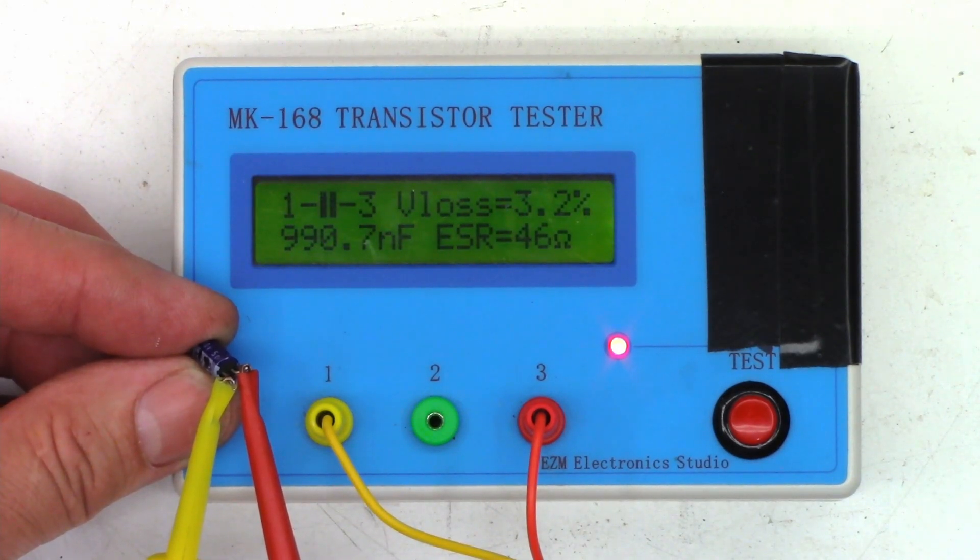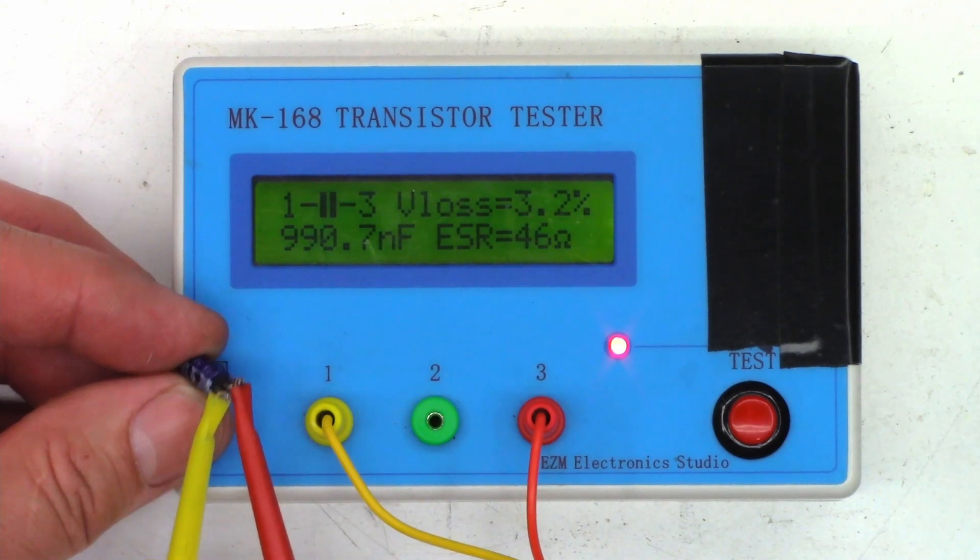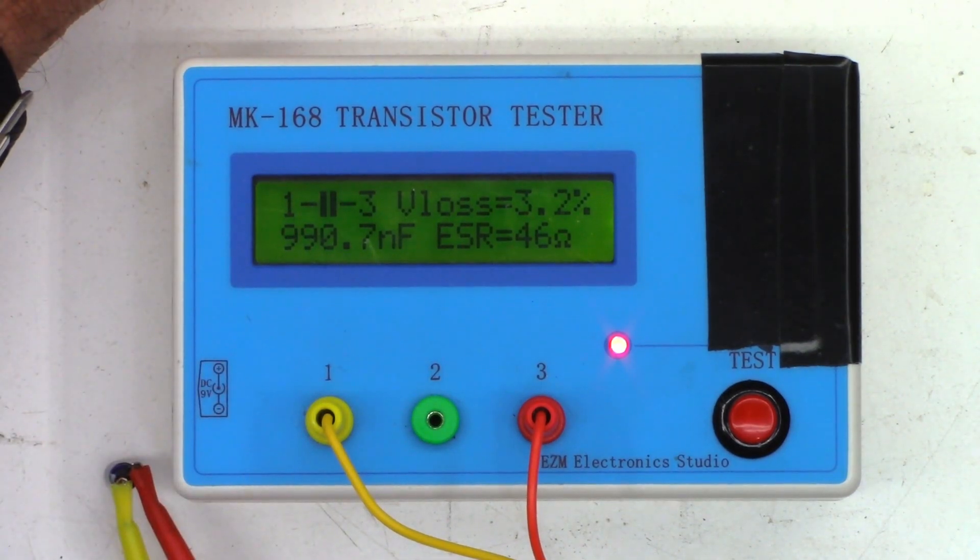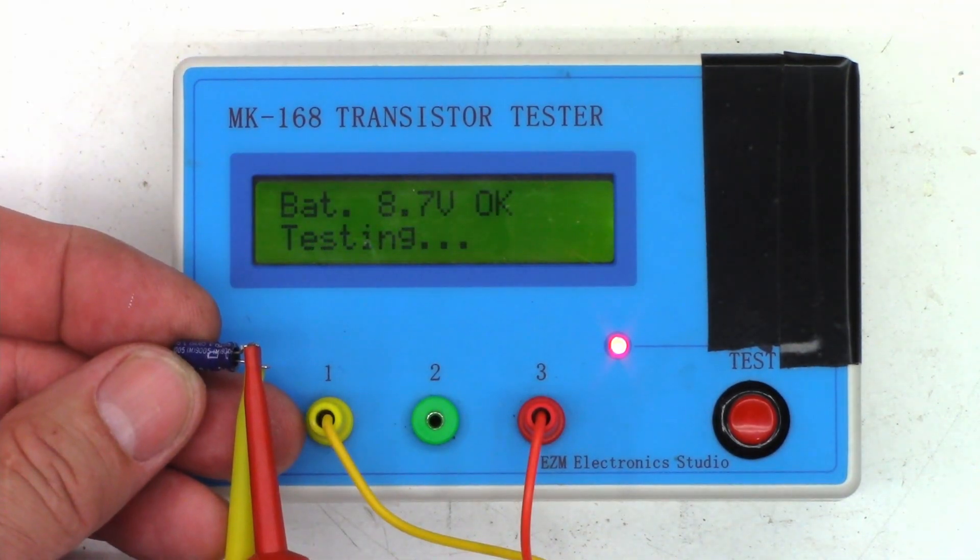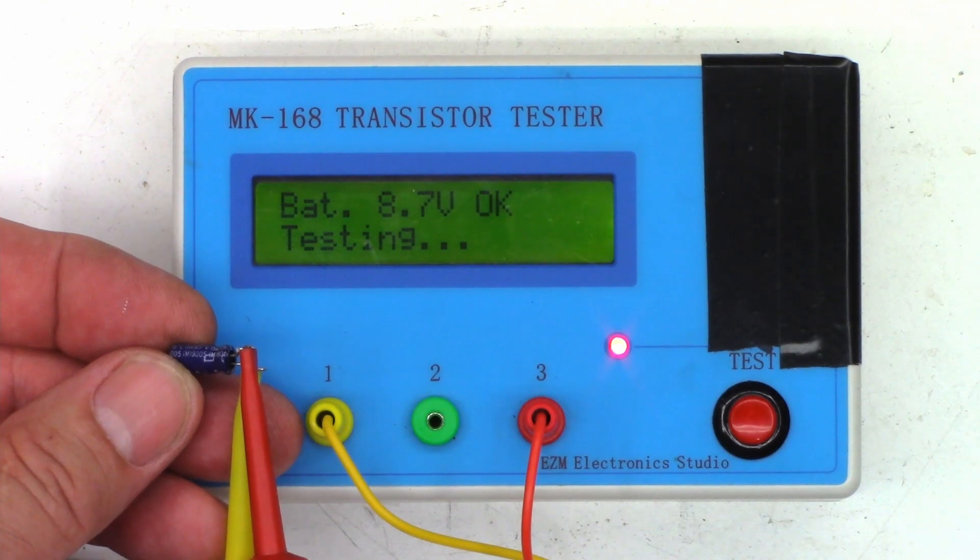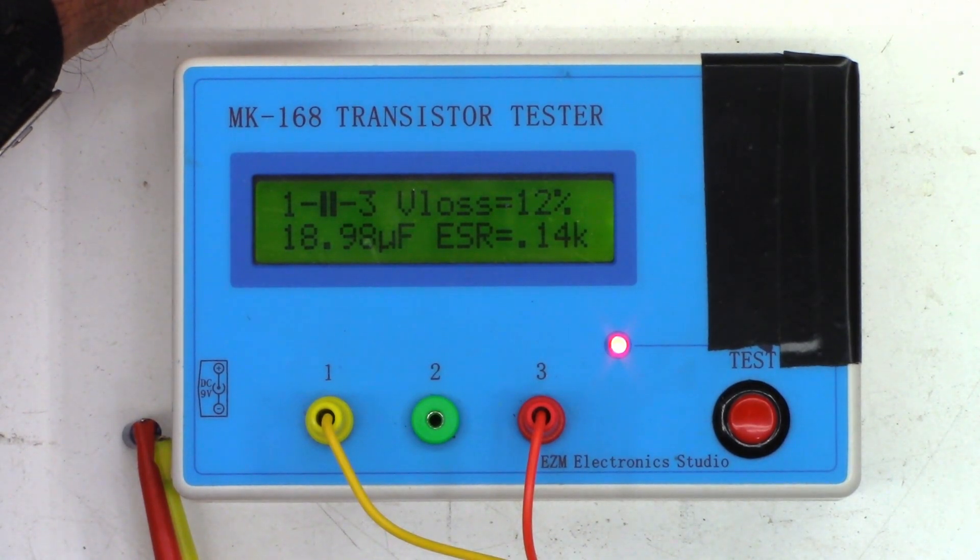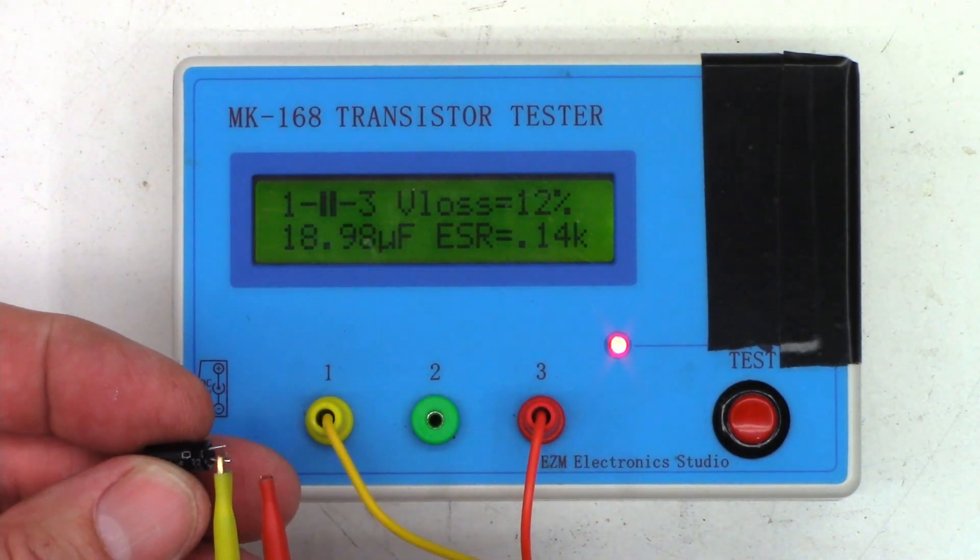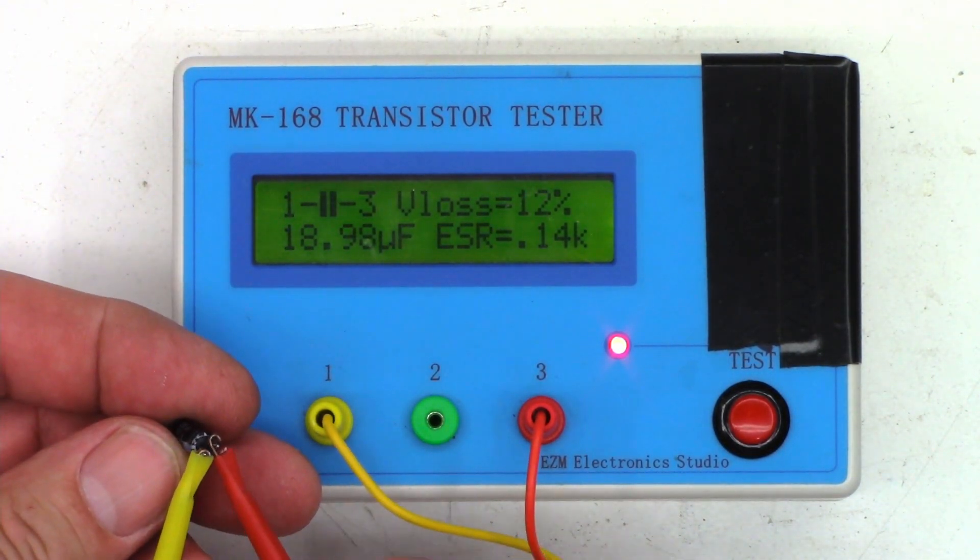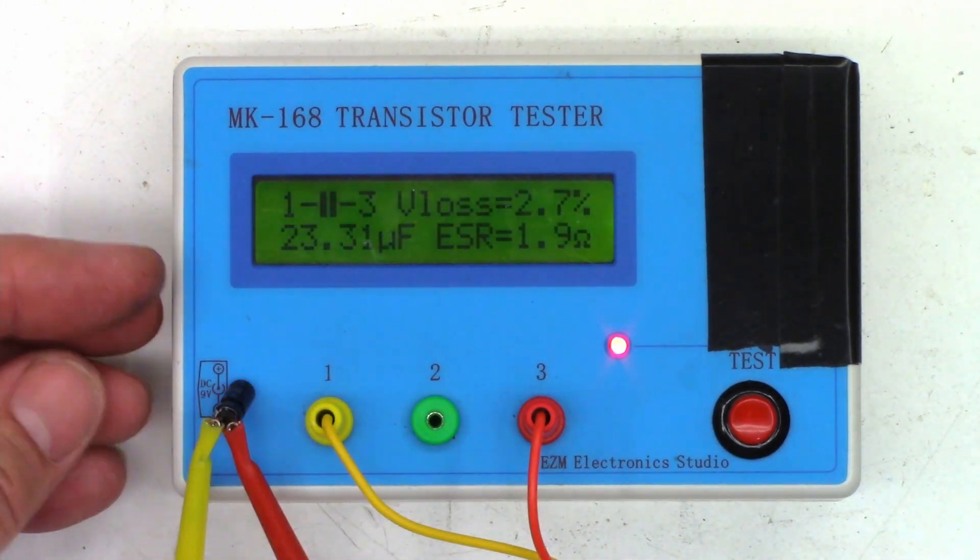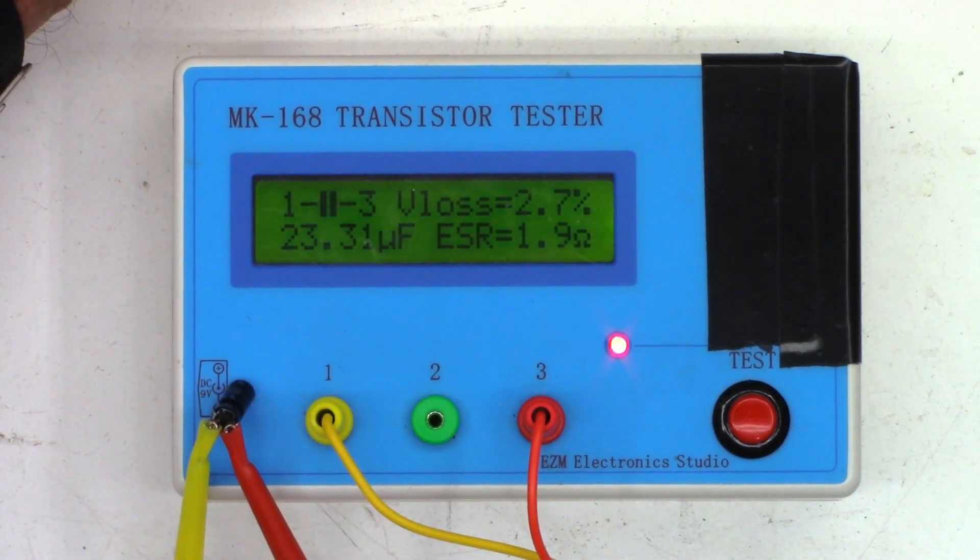Onto the Samwa 1 at 50. Well, 990 nanofarads, which is just shy of one microfarad, ESR of 46 ohms, and a V loss 3.2 percent. Now on to the Samwa 10 at 50. Couldn't even test this on either other unit. Wow, 18.98, so let's just call that 19. 19 microfarads, once again ESR of 0.14K or 140 ohms, V loss 12 percent.